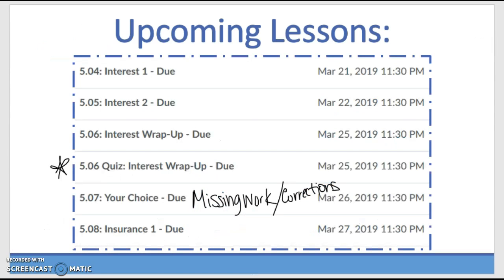Upcoming lessons. This is kind of today, or tomorrow, Thursday. Interest. You got the quiz. That's the only graded assignment there. On the 26th, so next Tuesday, you will have a your choice day. Do missing work, do corrections, redo a project that you did not do well on, redo a Part 2 that you did not do well on. Somehow bring up your grade. If you're sitting with a nice, pretty A, work ahead or go do something for another class.